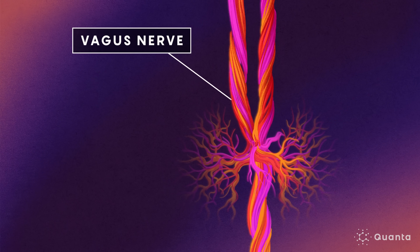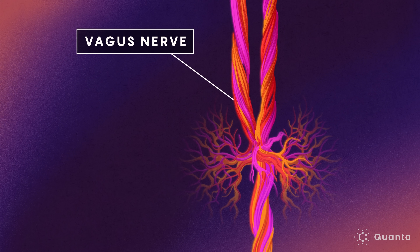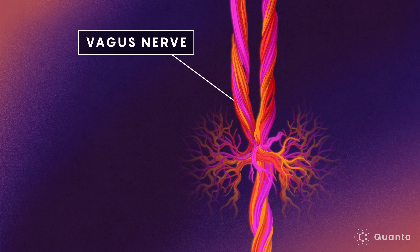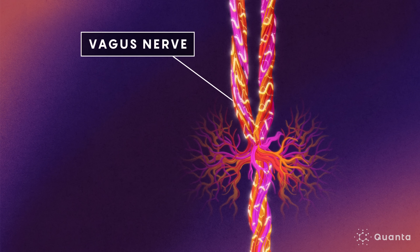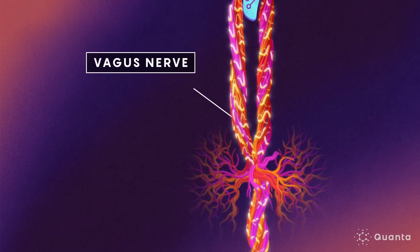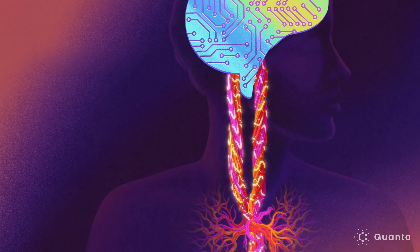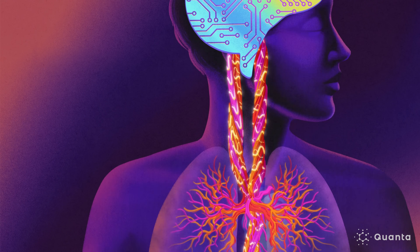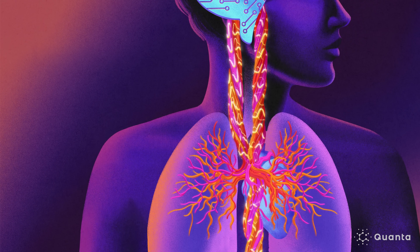This is the vagus nerve. This long bundle of neurons is a two-way information superhighway that connects the brain to many of the body's internal organs. There's a dizzying array of stimuli that comes up from the body and can evoke various behavioral and physiological responses. The brain can also, in turn, regulate the body.